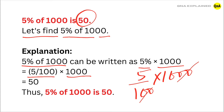5 x 10 is equal to 50, thus 5% of 1000 is equal to 50.